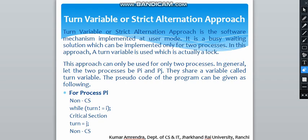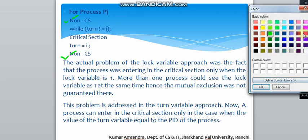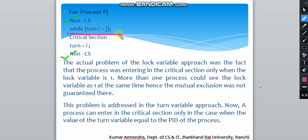Now let's see the algorithm or pseudo code for the second process, PJ. In PJ, there is a non-critical section at the start and end. In Pi's case we were checking for turn not equal to I. In PJ's case, we check for turn not equal to J. As long as turn is not J, it waits. When it enters the critical section, the value of turn at the end of the iteration will be I — just as it was J at the end for Pi.